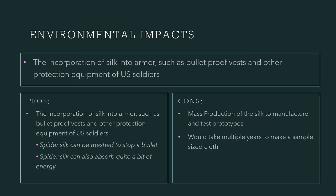Environmental Impacts: With spider silk being an incredibly strong material, scientists are looking at ways to incorporate the silk into armor. Bulletproof vests and other protection equipment for soldiers are heavy and bulky and can cause difficulty during operations. The solution is creating a spider silk vest that can stop a bullet while being lightweight. It has been found that spider silk can be formed into a mesh that can stop a bullet and that the material can absorb quite a bit of energy. However, the problem remains mass production of the silk in order to manufacture and test prototypes. Even while using millions of spiders, it takes multiple years to make a decent-sized sample of cloth.